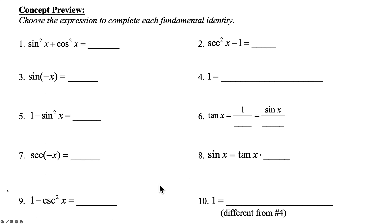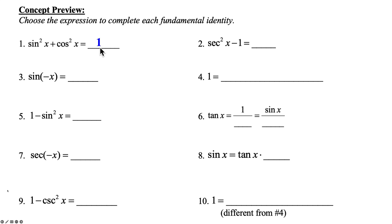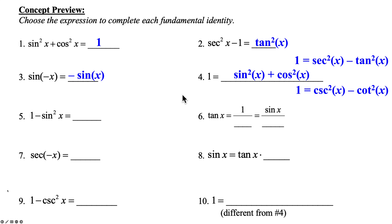Choose the expression to complete each fundamental identity. Sine squared x plus cosine squared x equals 1. Secant squared x minus 1 equals tangent squared x, just an alternate form of the Pythagorean identity. Here's our odd and even identity: sine of negative x equals negative sine of x. For 1 equals, you can use any of the three forms of the Pythagorean identity. 1 minus sine squared x equals cosine squared x — we're subtracting the sine squared x over to the 1. Tangent of x equals 1 over cotangent x, activating the reciprocal identity.